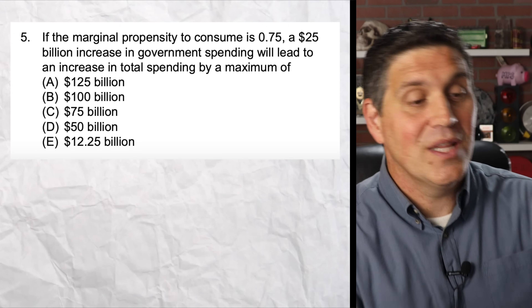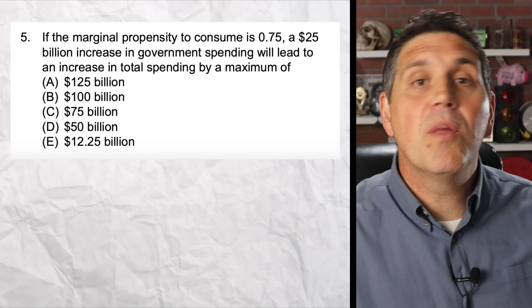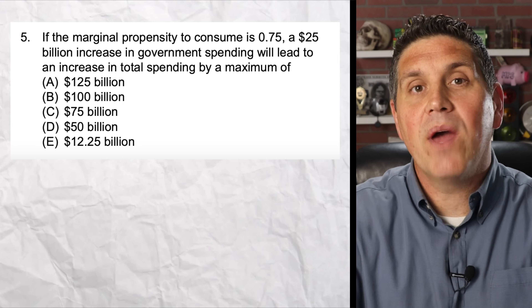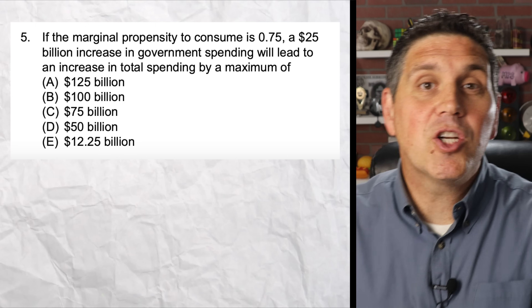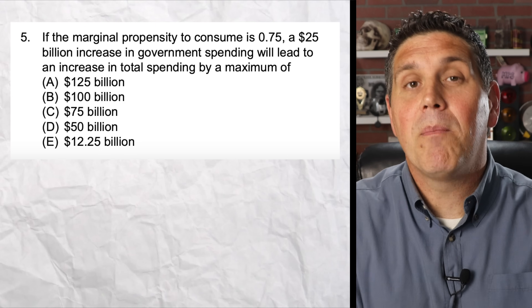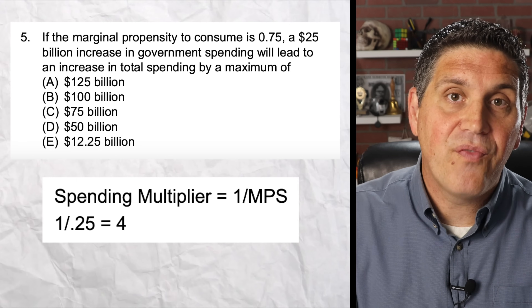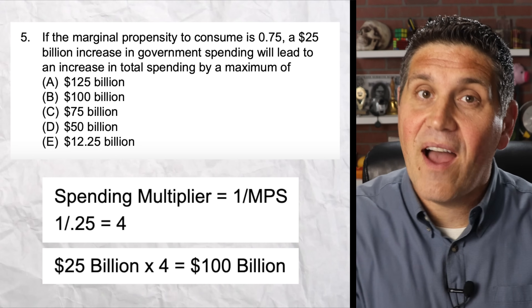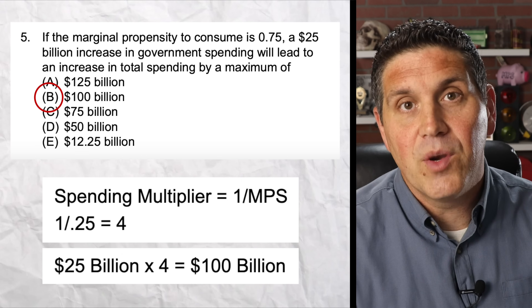You're definitely going to see a multiple choice question like question five, where you have to use the spending multiplier. They'll give you the marginal propensity to consume or save and an initial change, and you have to find the total change. For this one, the marginal propensity to consume is 0.75, so the marginal propensity to save is 0.25. The spending multiplier is 1 divided by 0.25, which gives you a multiplier of four. That initial change of $25 billion times four gives you a grand total of $100 billion — answer B.